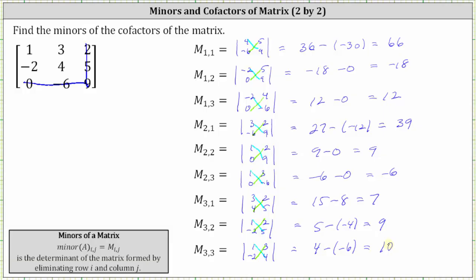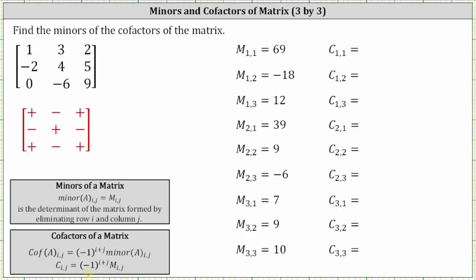Now that we have all the minors, let's find the cofactors. Cofactor i comma j is equal to negative one raised to the power of i plus j, times the minor i comma j. So cofactor one comma one is equal to negative one raised to the power of one plus one, times minor one comma one. The square of negative one is positive one, and minor one comma one is 66. One times 66 is 66. Cofactor one comma two is negative one raised to the power of one plus two, times minor one comma two. The cube of negative one is negative one, and minor one comma two is negative 18. Negative one times negative 18 is positive 18. Cofactor one comma three is negative one raised to the power of one plus three, times minor one comma three. The fourth power of negative one is positive one, and minor one comma three is 12. One times 12 is 12.